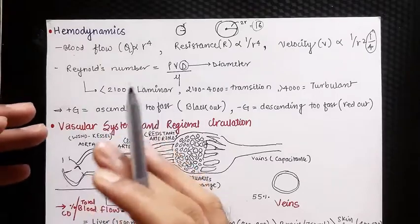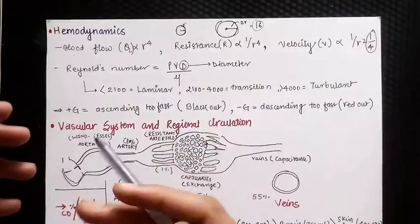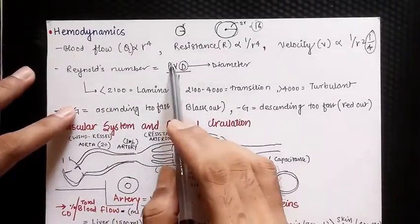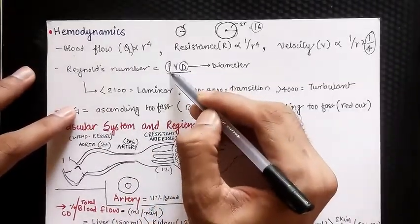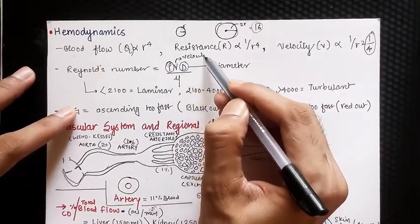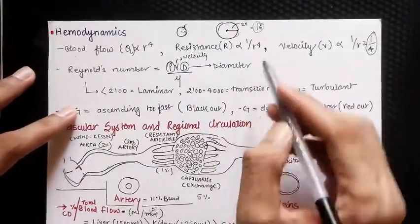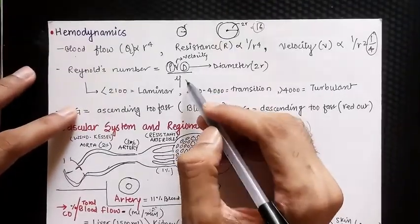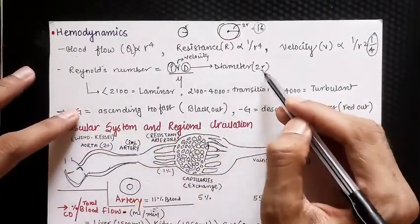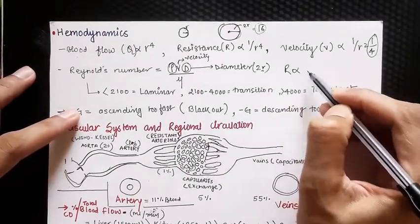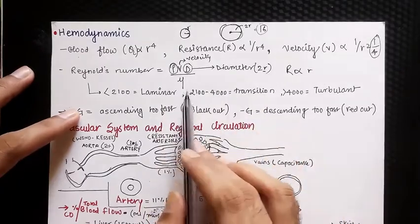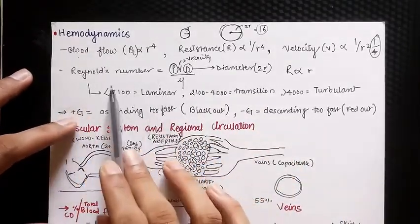Next is Reynolds number, a unitless quantity which determines the flow of blood or any fluid. Reynolds number equals ρvd/μ, where ρ represents the density of the fluid, v represents the velocity, d represents the diameter (2r), and μ is the viscosity constant. Reynolds number is directly proportional to radius, velocity, and density, but inversely proportional to viscosity.